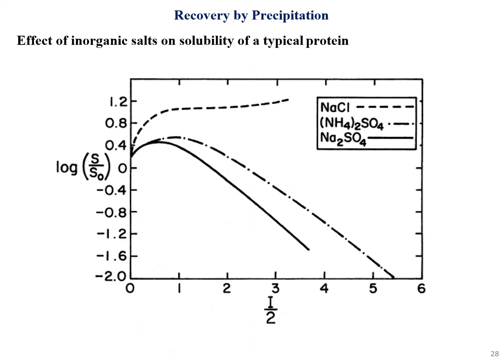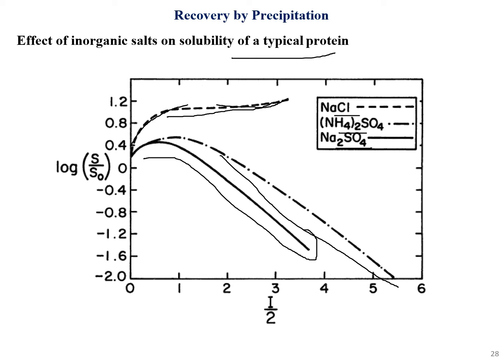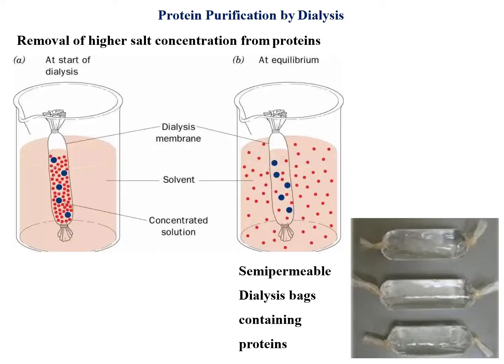Here are graphs showing the effect of inorganic salts on the solubility of a typical protein. With NaCl, ammonium sulfate, and sodium sulfate, solubility gradually decreases as salt concentration increases. These graphs illustrate how solubility depends on these salts during precipitation.